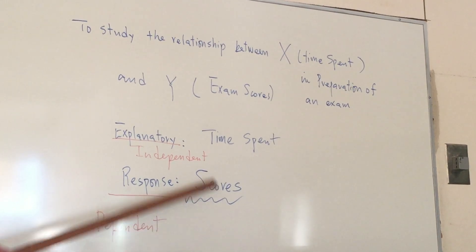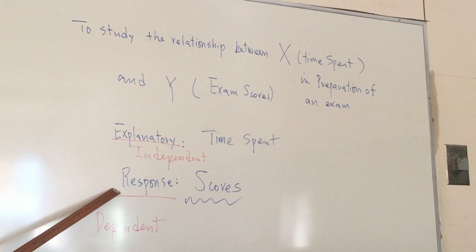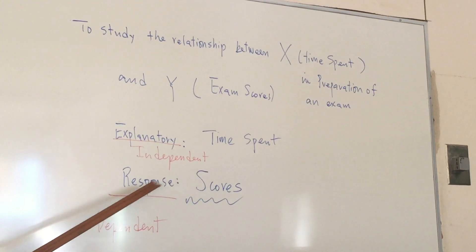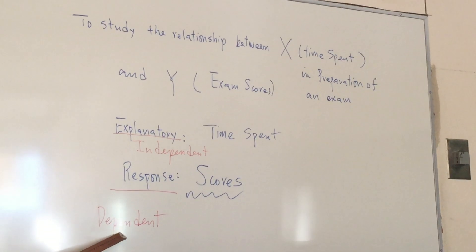Exam score, that's the outcome. So the outcome is the response variable. In other books they don't call it response variable, they call it the dependent variable.